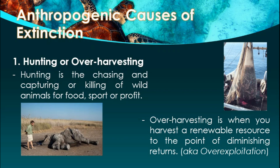Now let's move on to the anthropogenic causes of extinction. The first is hunting or over-harvesting. Hunting is the chasing and capturing or killing of wild animals for food, sport, or profit. One example is poaching, where animals are hunted for body parts like rhinoceros horns and elephant tusks. Over-harvesting, also known as over-exploitation, occurs when you harvest a renewable resource beyond diminishing returns, consuming more than what is actually needed.